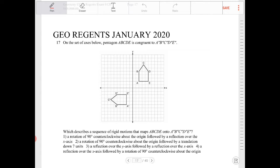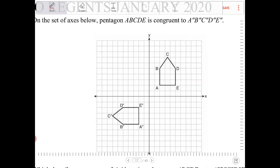Which describes a sequence of rigid motions that maps ABCDE onto that image. Just taking a look at this, it looks like there's definitely going to be a rotation, and I would say then a translation. Just looking at this, it looks like...